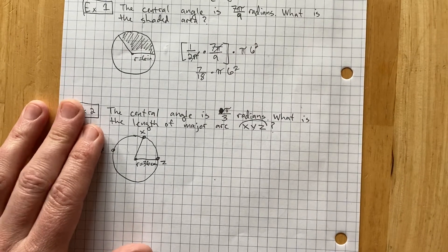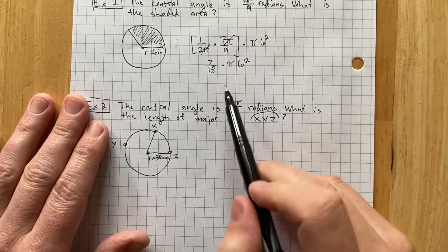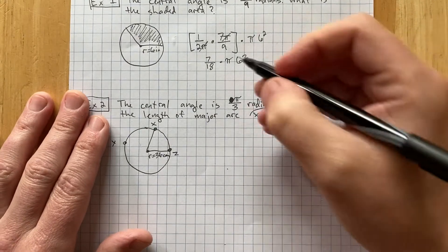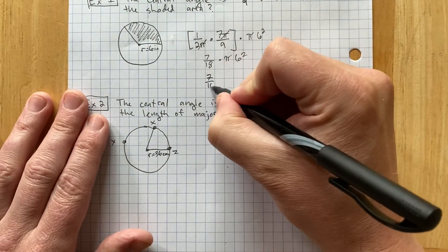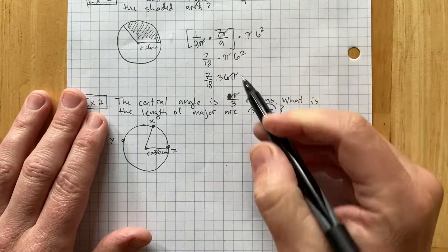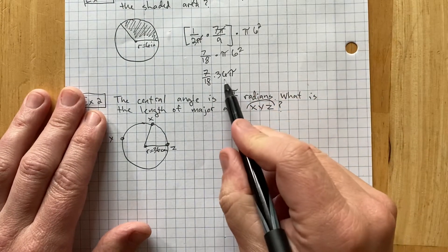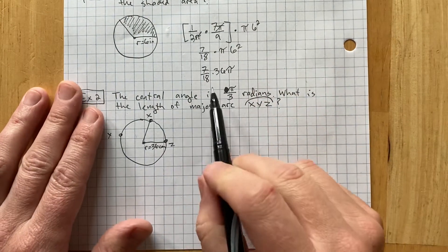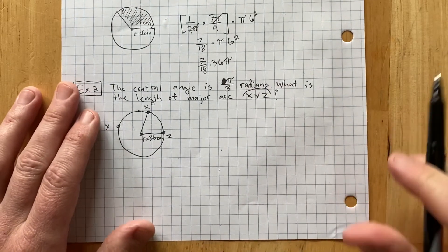And I'm supposed to multiply that by pi times 6 squared. 6 squared is 36. So, why don't I just write 7 eighteenths times 36 pi. I rearranged the pi and the 6 squared here because I think it's a little bit easier to understand. And you can multiply in any order.